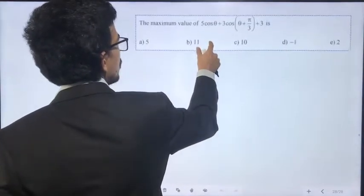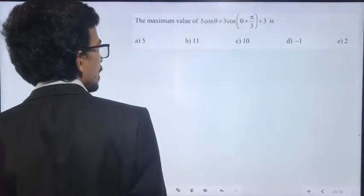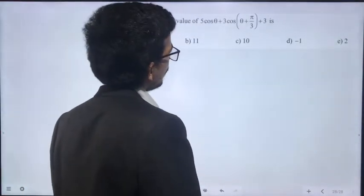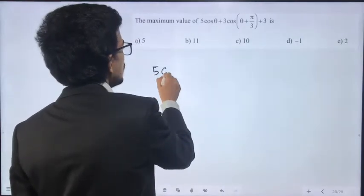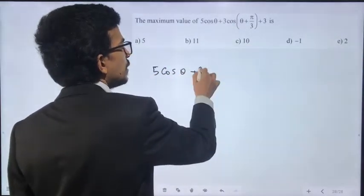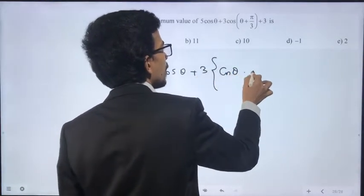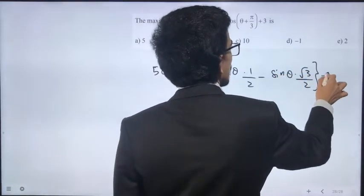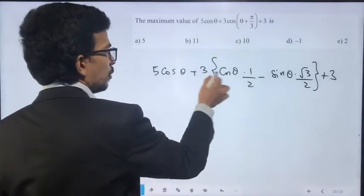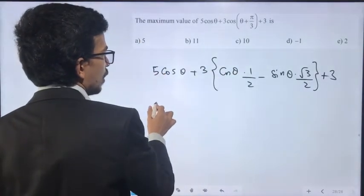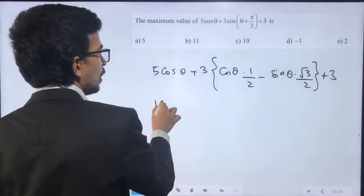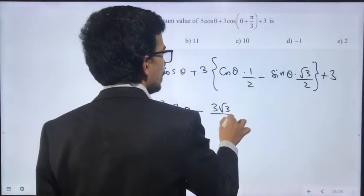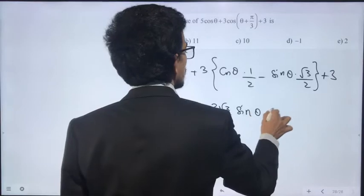The maximum value of 5cos(θ) + 3cos(θ + π/3) + 3. We have 5cos(θ) + 3[cos(θ)cos(π/3) - sin(θ)sin(π/3)] + 3. This becomes (13/2)cos(θ) - (3√3/2)sin(θ) + 3.